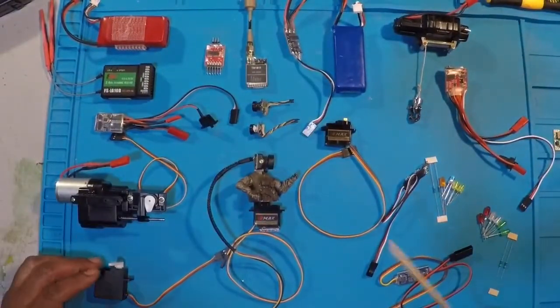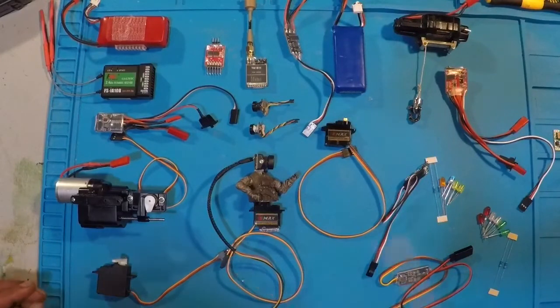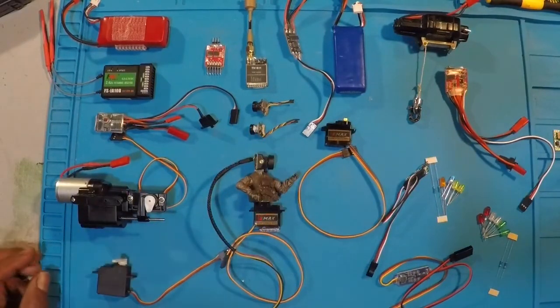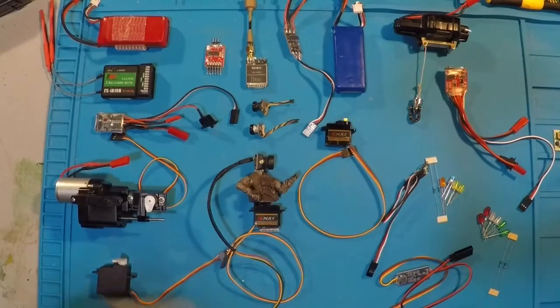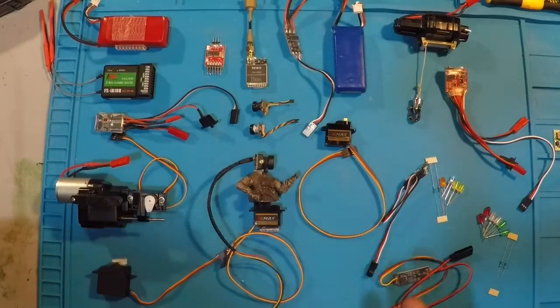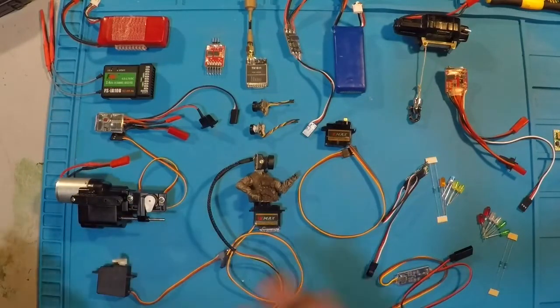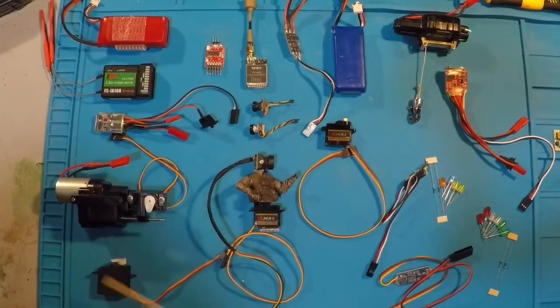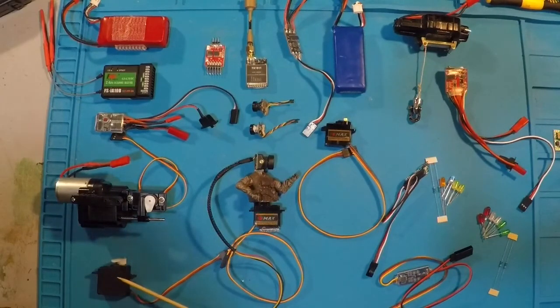Okay. I'm going to go around the mat and call out the components and their respective channels. You may use just about anything in your build. We're going to be working with a 10 channel receiver. So I've got up to 10 channels to play around with. And these are just items that I thought might be fun to use. So starting with the usual suspect on channel one, we're going to have the steering servo.